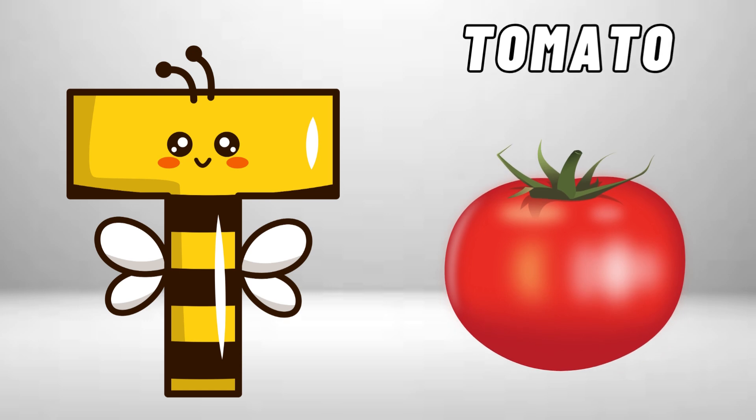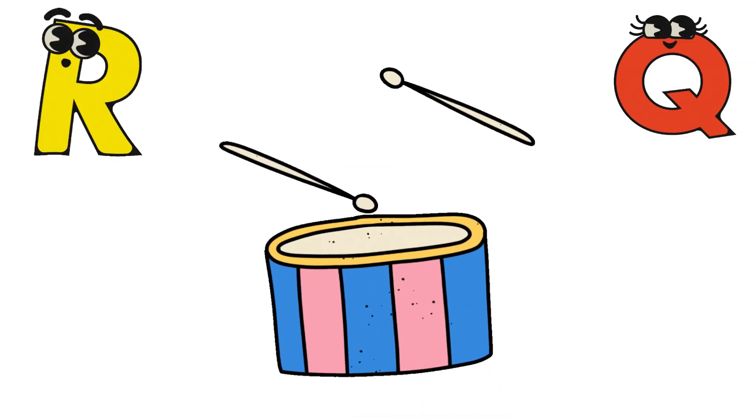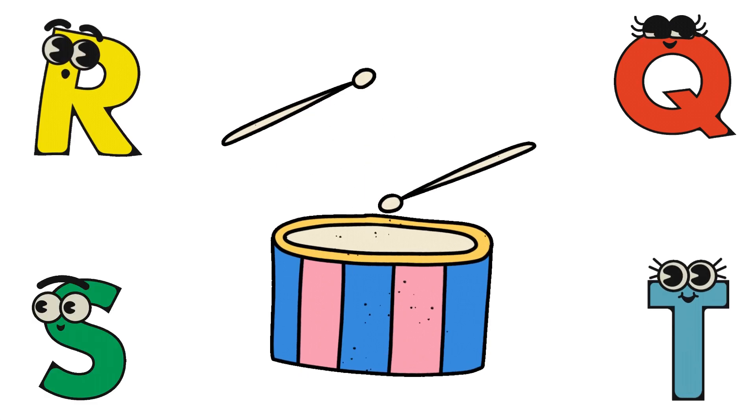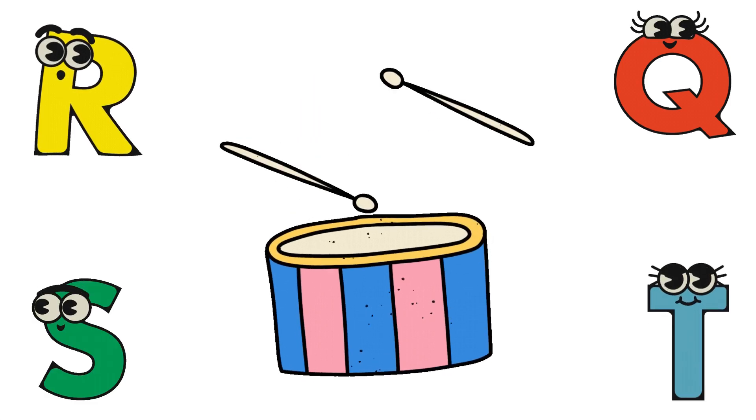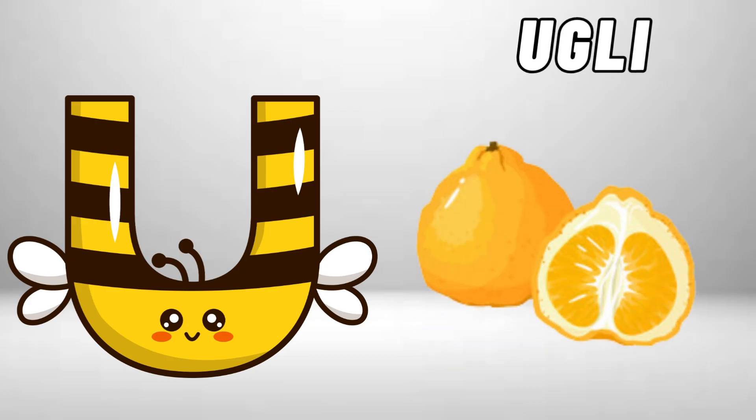T is for Tomato. T, T. Tomato. U is for Ruvli. R. Ruvli.